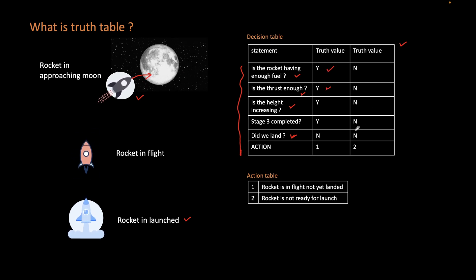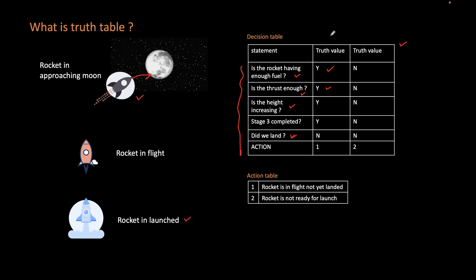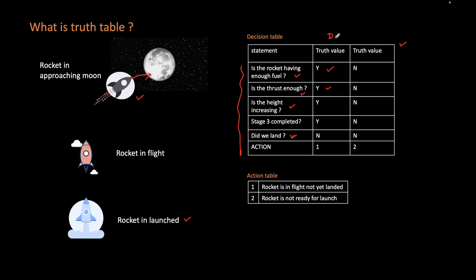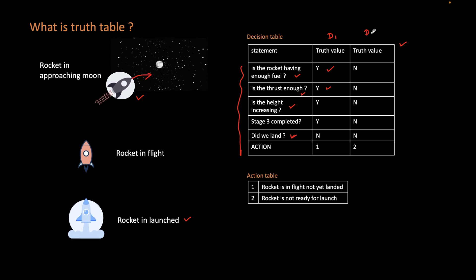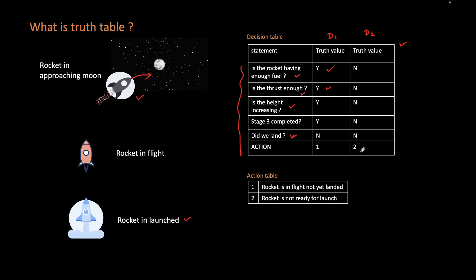On top, the individual columns you can see are decision columns. You can label them as D1 and D2. So there are two decision columns — D1 and D2 — and the corresponding decisions will lead to some actions.